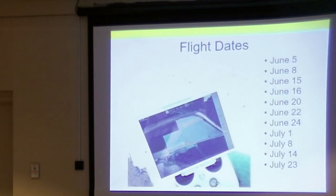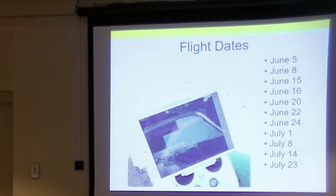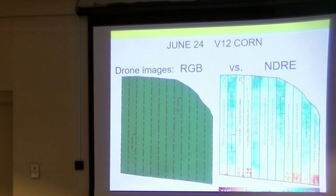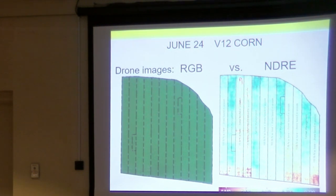We flew the field about 11 times because we were looking for the moment when the lower base rate strips started to show deficiency compared to the references. June 24th was apparently that day. Looking at both the RGB true-color view and the NDRE view from the same flight, you could see where the 75-pound rate strips really started to appear yellower and redder, meaning lower nitrogen content. The lower base rates were starting to run out of nitrogen, and we could detect that with NDRE when it wasn't visible in the true-color imagery.